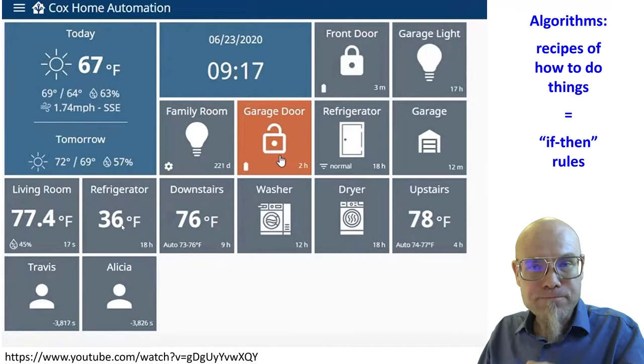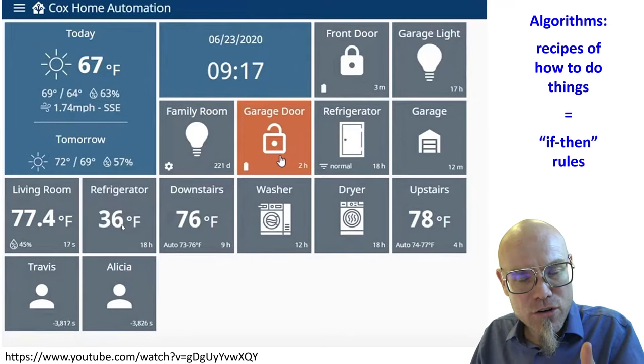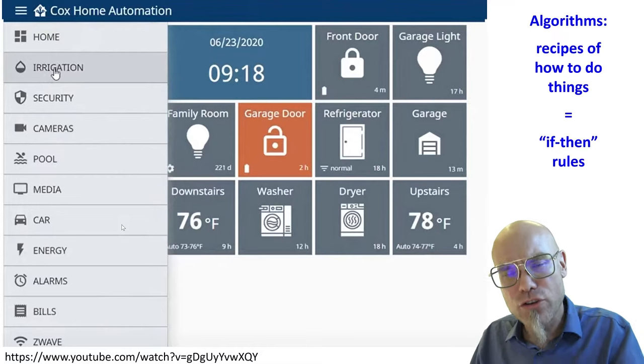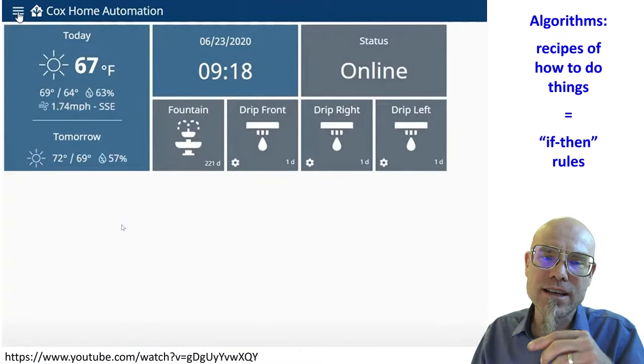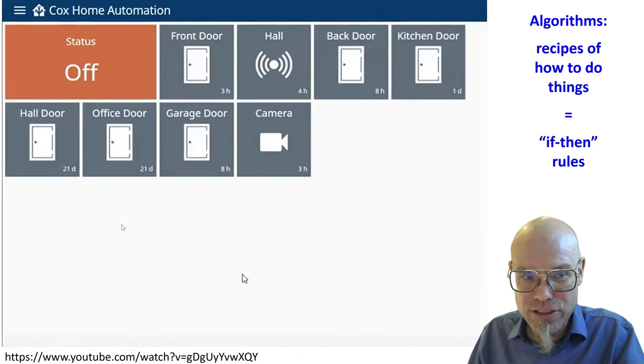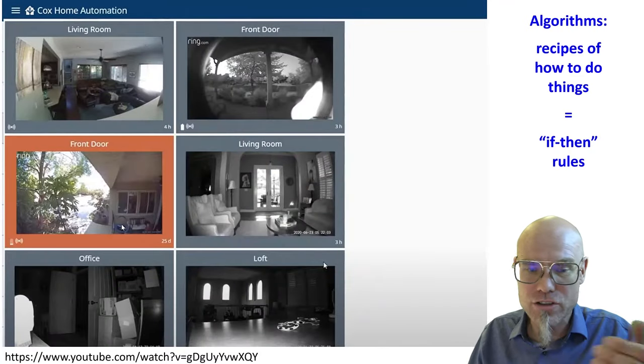So if I say, hey Google, hey Siri, hey Alexa, prepare the house for vacation, then it shuts down the garage door, it turns on the automatic irrigation, it closes the door, it sets up the security system, it puts the cameras in motion, and it starts to charge the car.